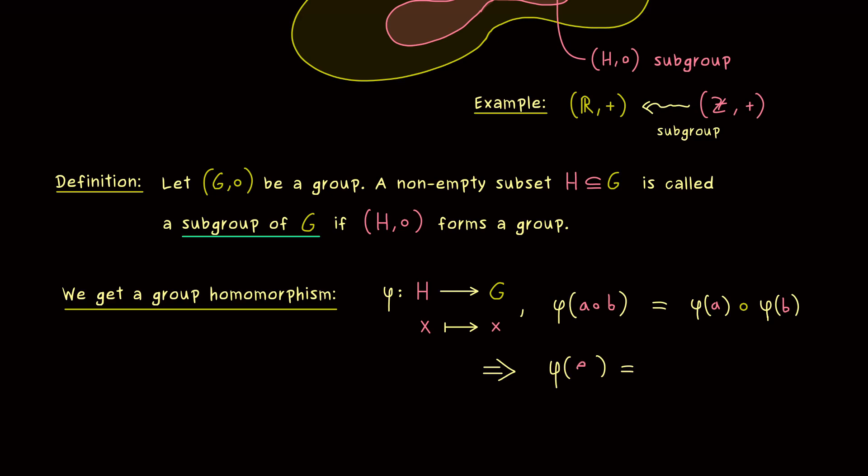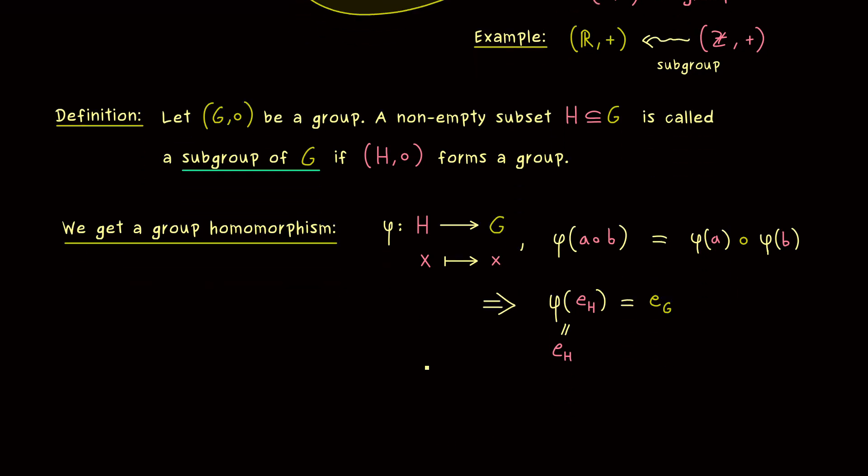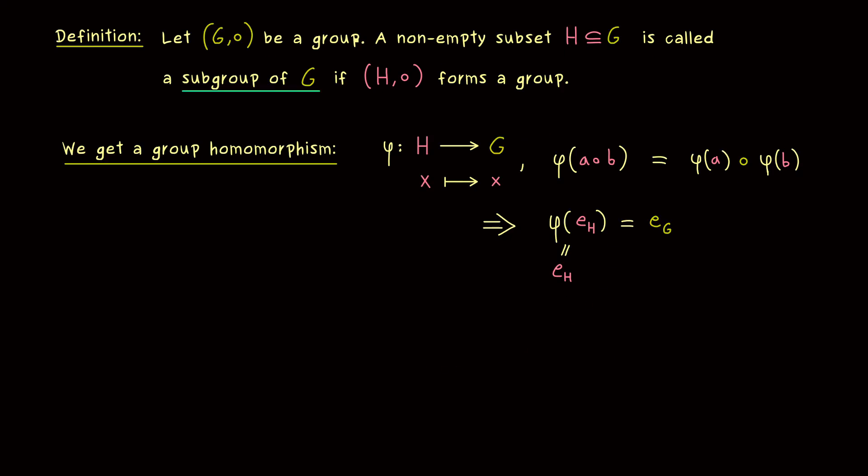So for example from the last video we know that the identity element is always sent to the identity element again. Hence the neutral element e_H is sent to e_G. However since the map φ does not do anything we get that e_H is equal to e_G. In other words we have already proven here that a subgroup has to have the same neutral element as the larger group around it. This was not clear from the beginning but now it's a proven fact. Every subgroup has the same neutral element.